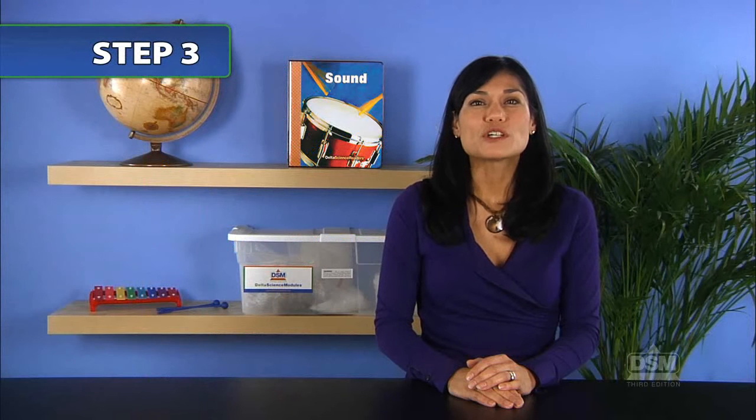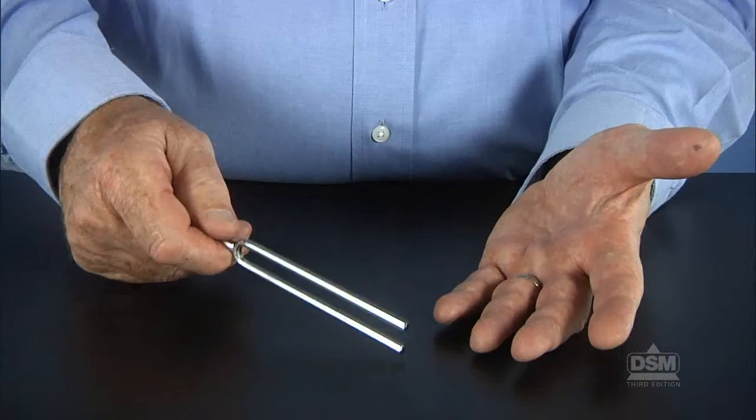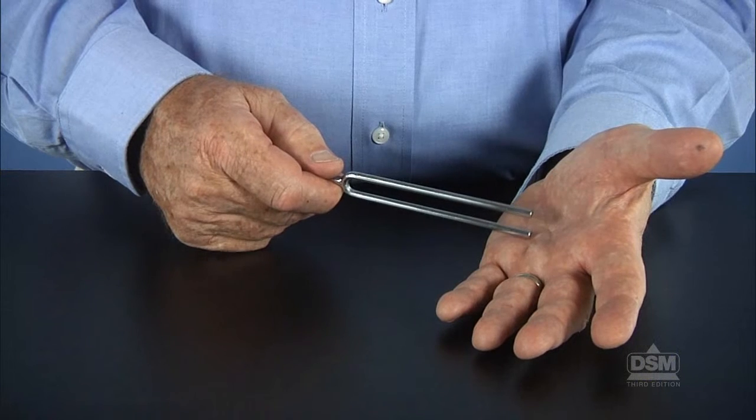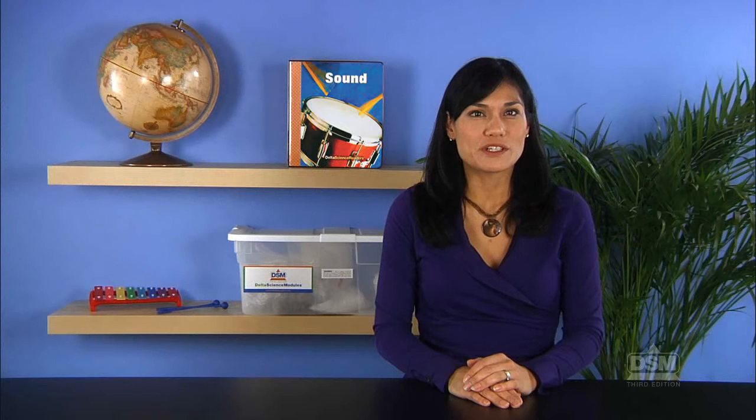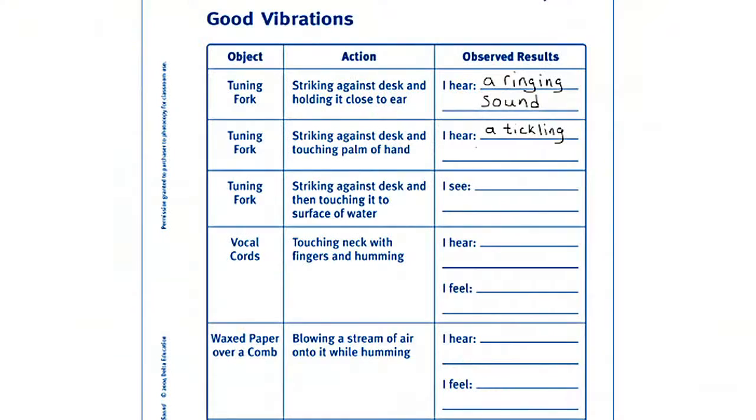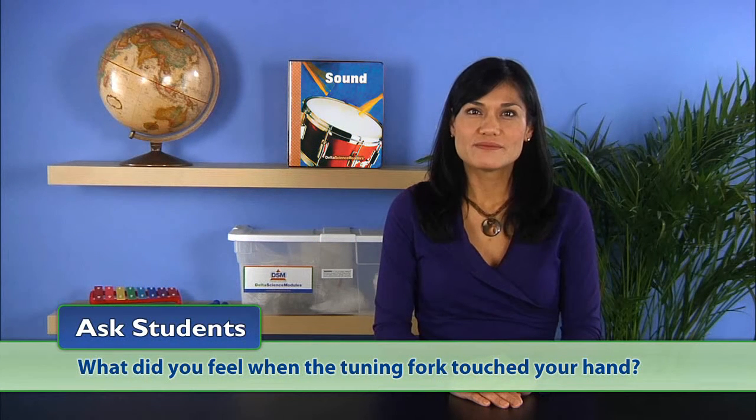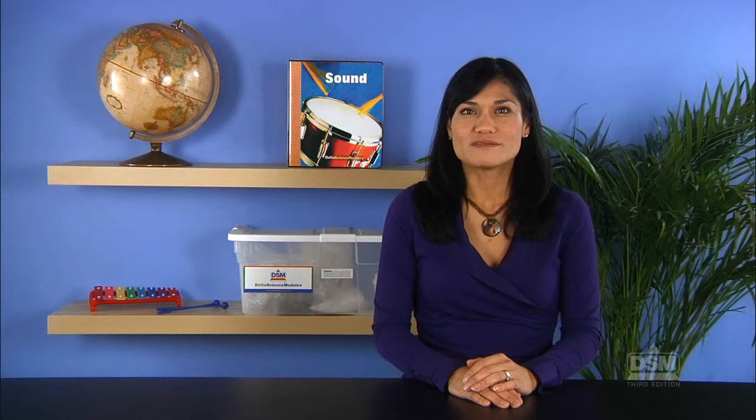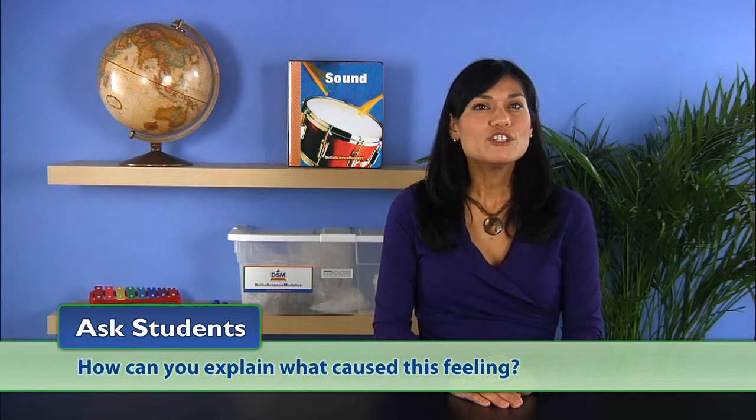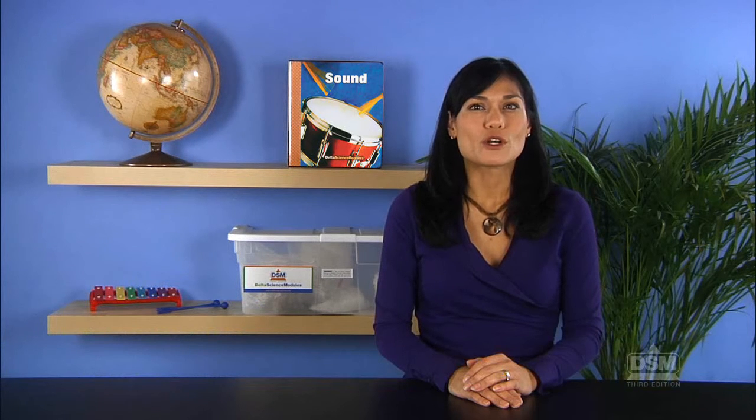Next, instruct one student on each team to gently tap the tuning fork against an object and then touch it lightly to the hand of a second student. Repeat this procedure until everyone has felt the tuning fork. Have them record their observations. Ask students what they felt when the tuning fork touched their hand. They may describe feeling a soft tickling sensation. Then ask how they can explain what caused this feeling. They may suggest that the tuning fork was moving.